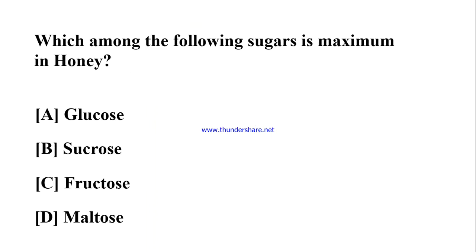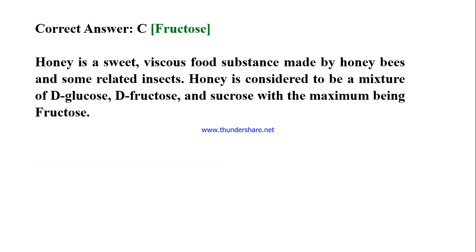Which among the following sugars is present in maximum quantity in honey? A) Glucose, B) Sucrose, C) Fructose, D) Maltose. Correct answer: C) Fructose. Honey is a sweet viscous food substance made by honey bees and some related insects. Honey is considered a mixture of D-glucose, D-fructose, and sucrose, with fructose being the maximum.